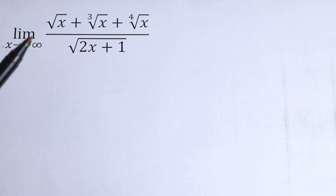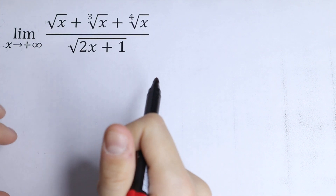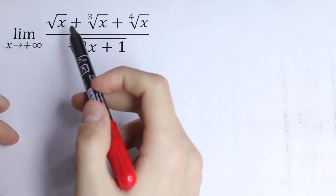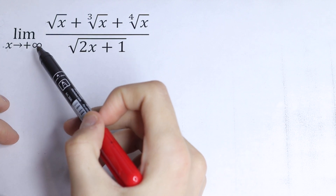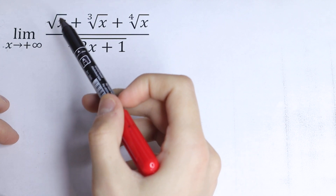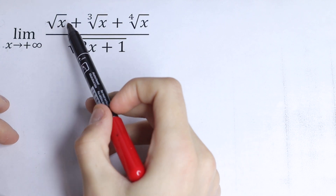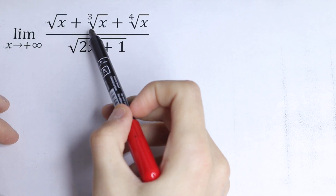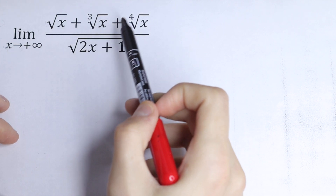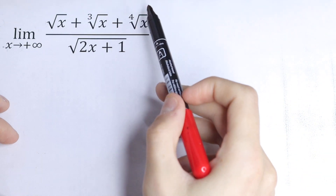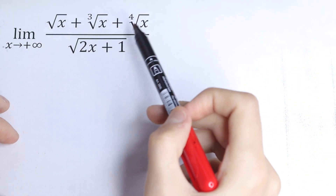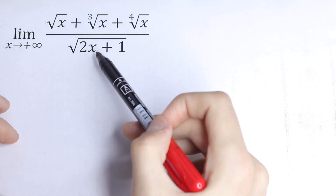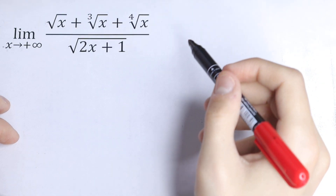Hello everyone, welcome back to Higher Mathematics! Here we have an interesting limit. What is the limit as x approaches plus infinity of the function: square root of x plus cube root of x plus fourth root of x, all over square root of (2x plus 1)?